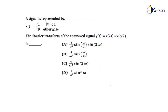The next question: a signal is represented by a given mathematical expression x(t), and we must take the Fourier transform of the convolved signal y(t) = x(2t) * x(t/2). The given data states x(t) = 1 for |t| < 1 and 0 otherwise. I will explain how to decode the meaning of |t|.